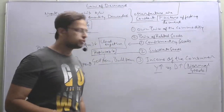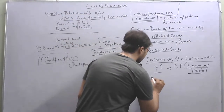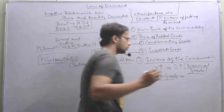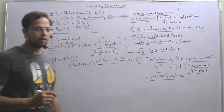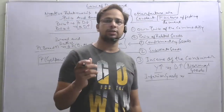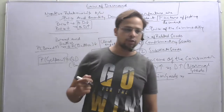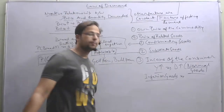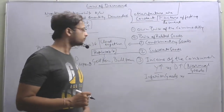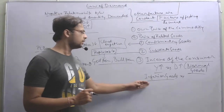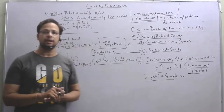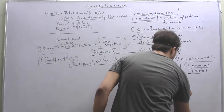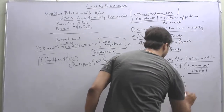But there is another category of goods called inferior goods. Inferior goods are those goods which are considered to be of lower quality — goods whose quality is not considered very good. In the case of inferior goods, there is an opposite effect: if people's income increases, they leave inferior goods behind and the demand for inferior goods will decrease.